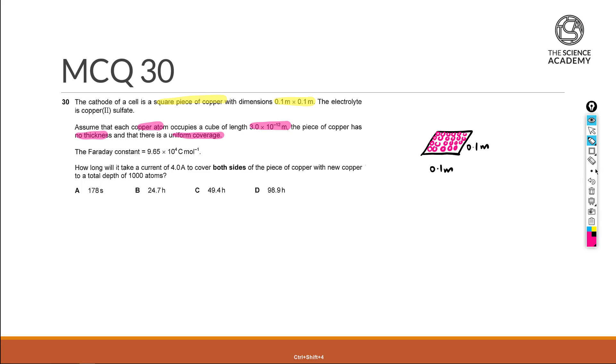And thereafter, the last criteria here is that this new piece of copper that has been coated with additional copper must have a total depth of 1000 atoms. Now do note that there are two interpretations of how this question could be done.